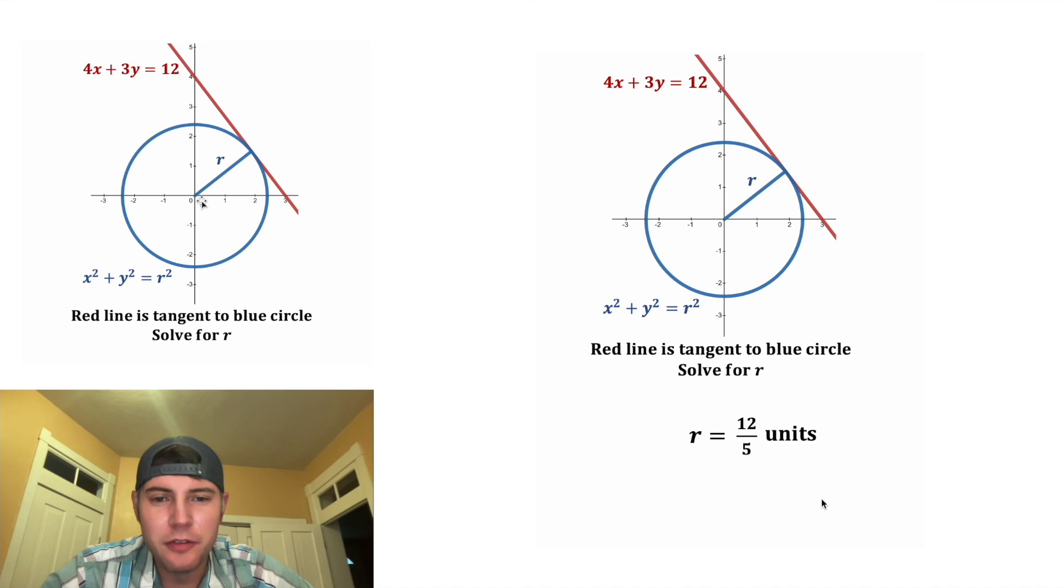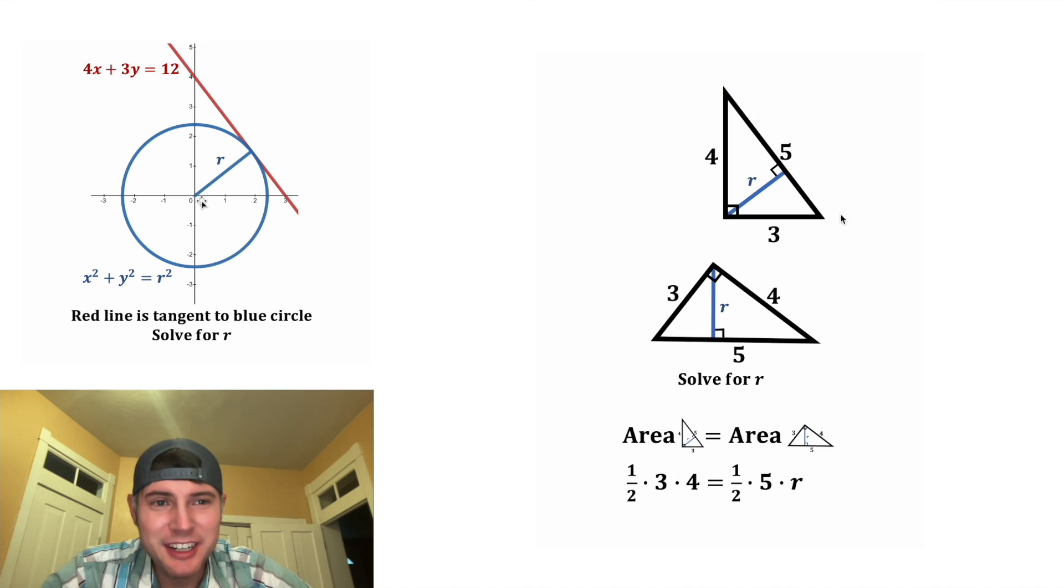And we can give it a label of units and put a box around it. So in this situation, the radius is 12 fifths units. How exciting. Wasn't that a neat solution, setting the two triangles equal to each other?